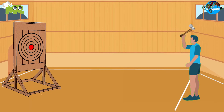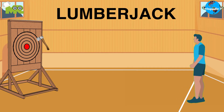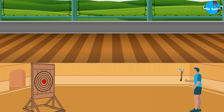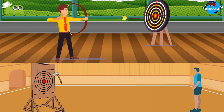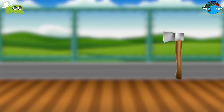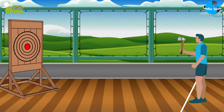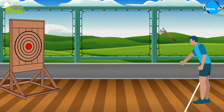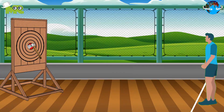Axe throwing is a form of target striking sport that originated from the lumberjack. The sport shares a lot of similarities with archery, except that axes are being thrown instead of arrows being shot. The objective for each participant is to throw the axe at a target's circular board.